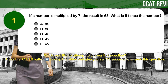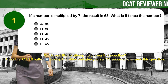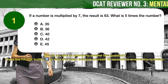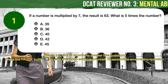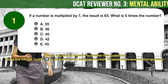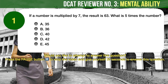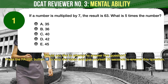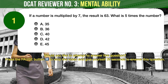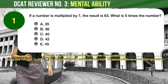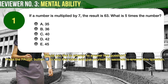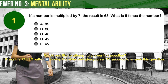Question number 1. If a number is multiplied by 7, the result is 63. What is 5 times the number? A: 35. B: 36. C: 40. D: 42. E: 45.